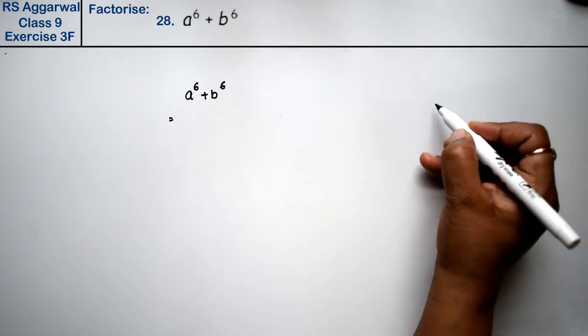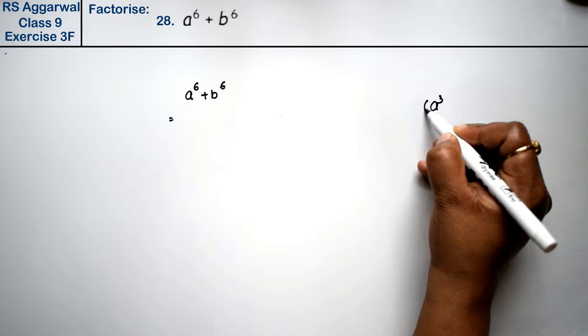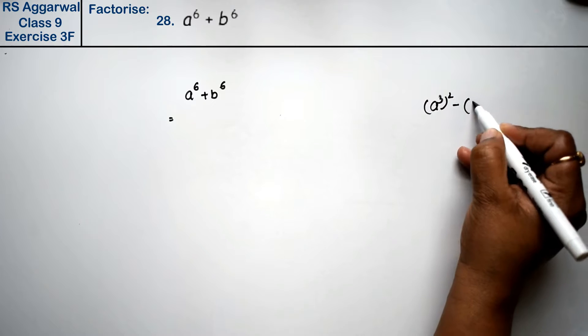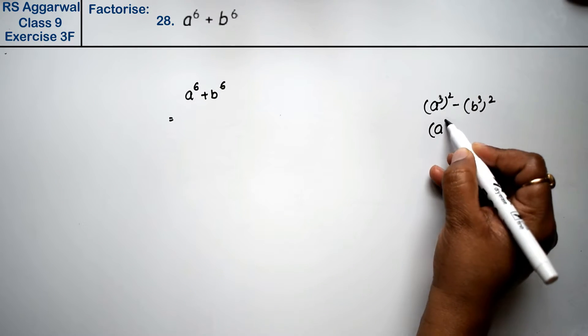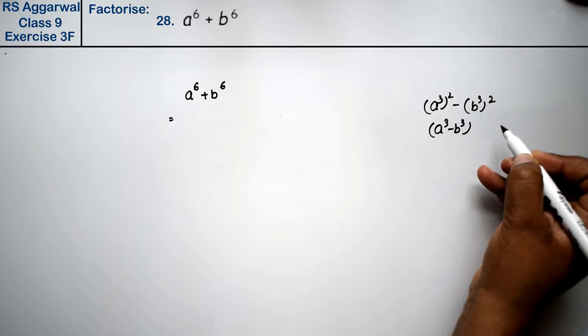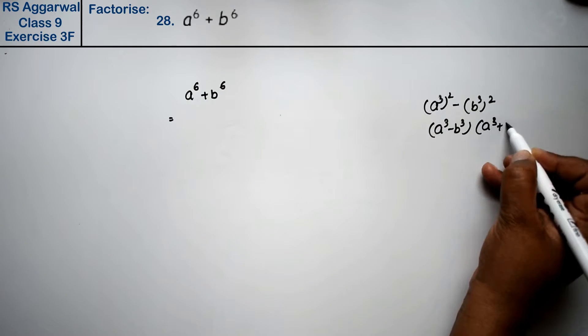If it is minus here, then we write a cube of whole square minus b cube of whole square. Which is the formula, we easily write a^3 minus b^3 and write a^3 plus b^3.